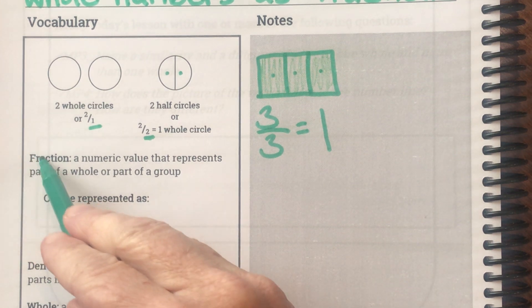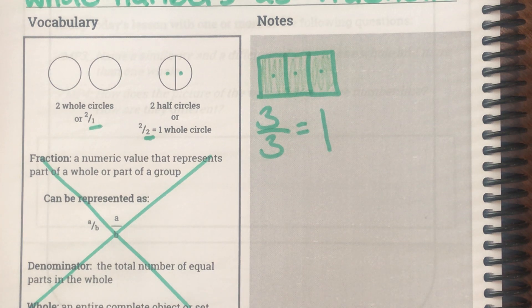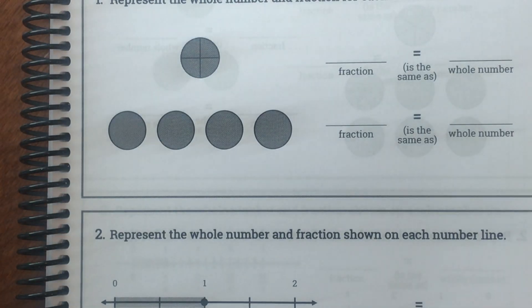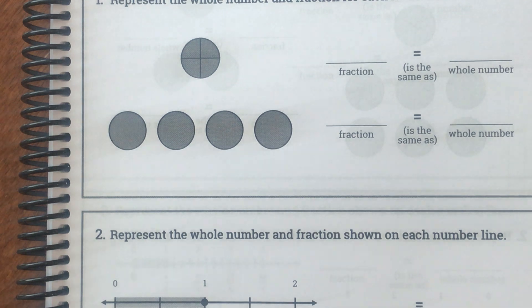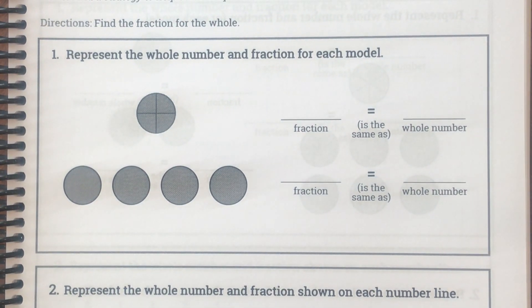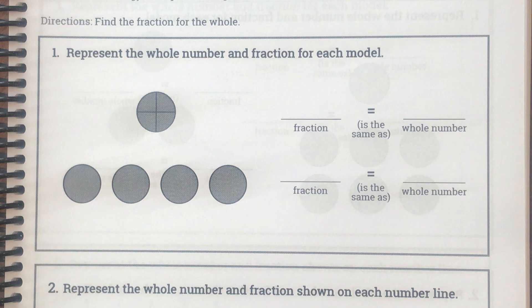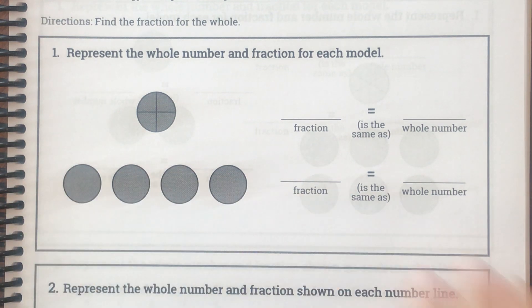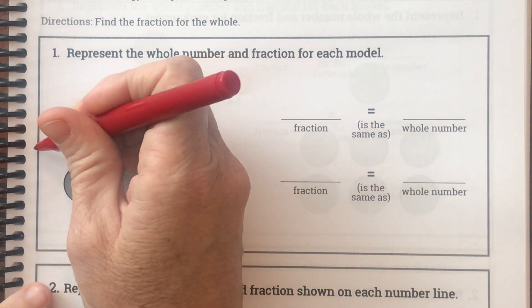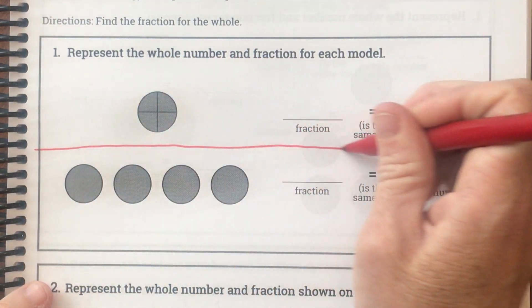We are not going to read through these vocabulary terms because those are review. I'm going to jump in and get started showing you this. You're going to notice, boys and girls, that I'm going to use shading on the examples, but you shouldn't need to get anything out. Let's look at my first example. It says represent the whole number and fraction for each model. They put two separate models close together, so I'm going to show you — I'm doing two separate problems, a top and a bottom.